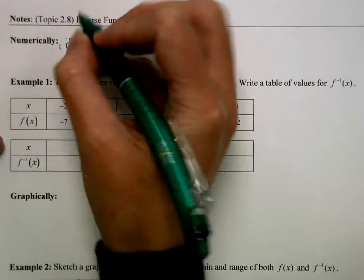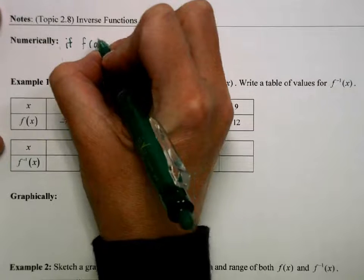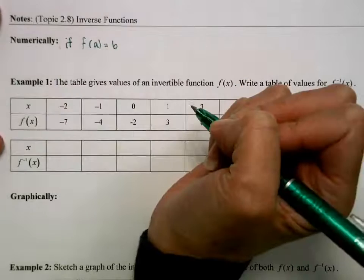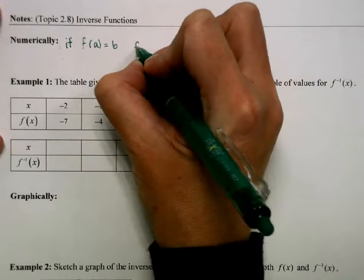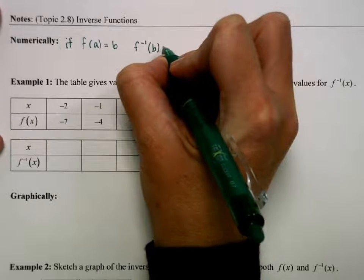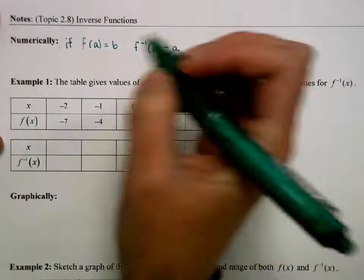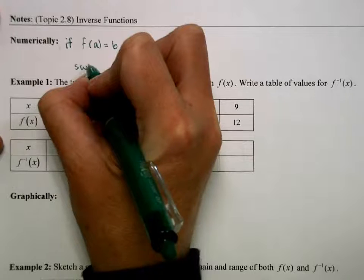Numerically, if f(a) is equal to b, then f inverse of b is a. So basically we're just going to switch x and y.